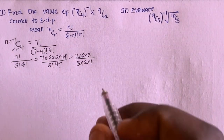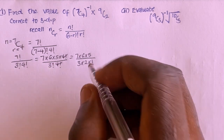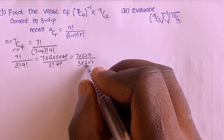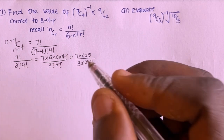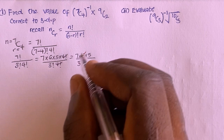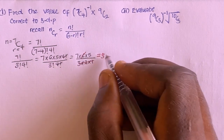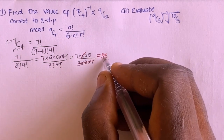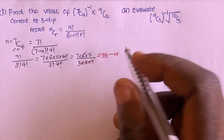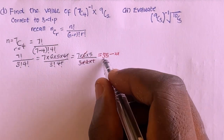3 factorial is 3 times 2, which equals 6. So 6 in the denominator cancels with 6 in the numerator, leaving 7 multiplied by 5, which equals 35. So 7 combination 4 equals 35.